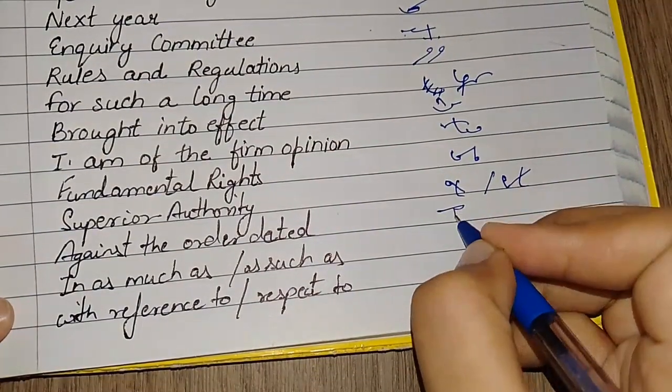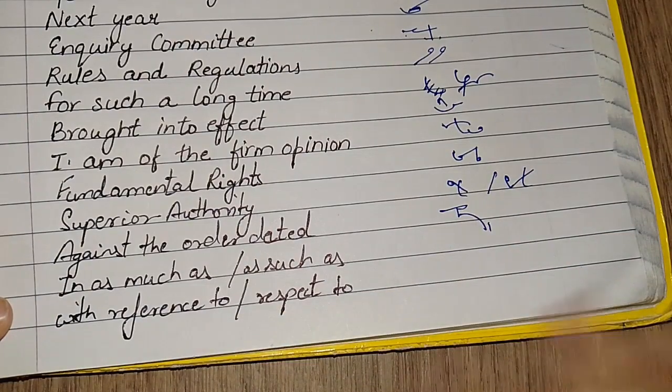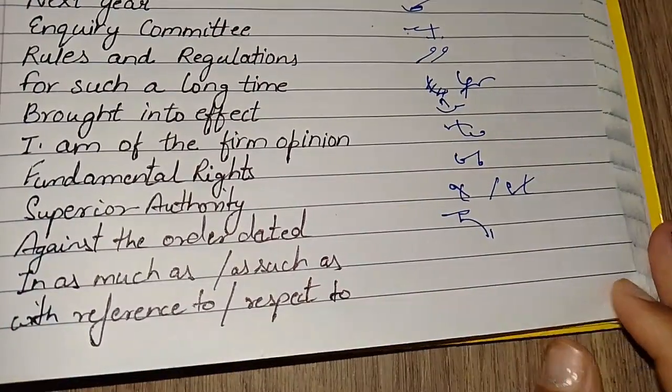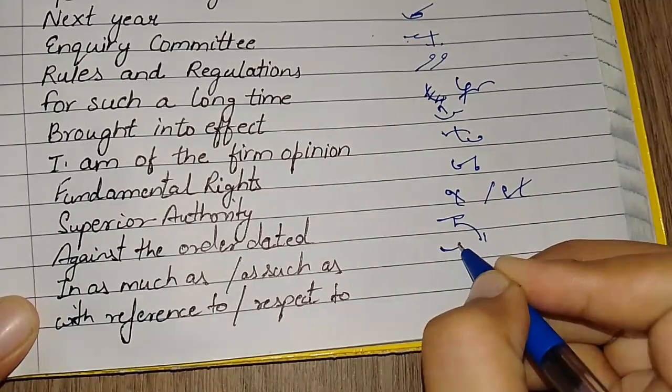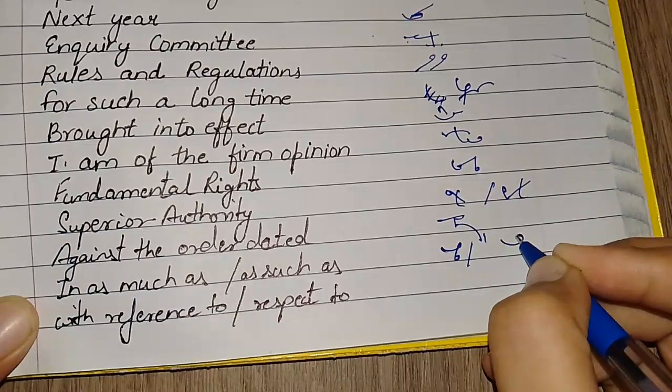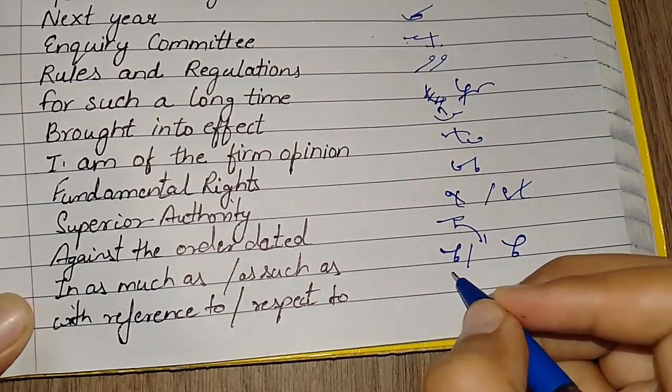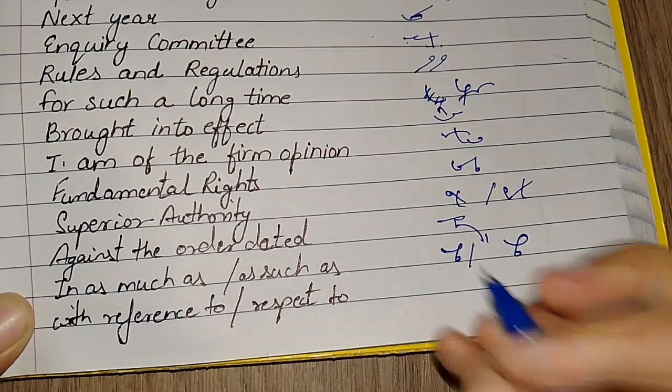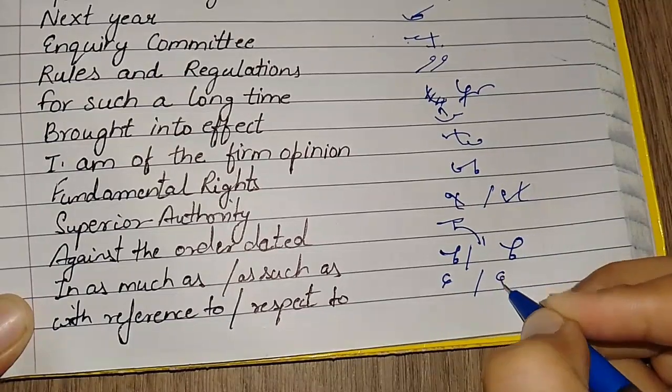Against the order dated. In as much as, in as such as - I explained this before. Let me differentiate for you to make it easy. In as much as is written like this, and in as such as is written like this, make this circle bigger. With reference to and with respect to, I've differentiated these. With reference to is written like this, and with respect to is written like this.